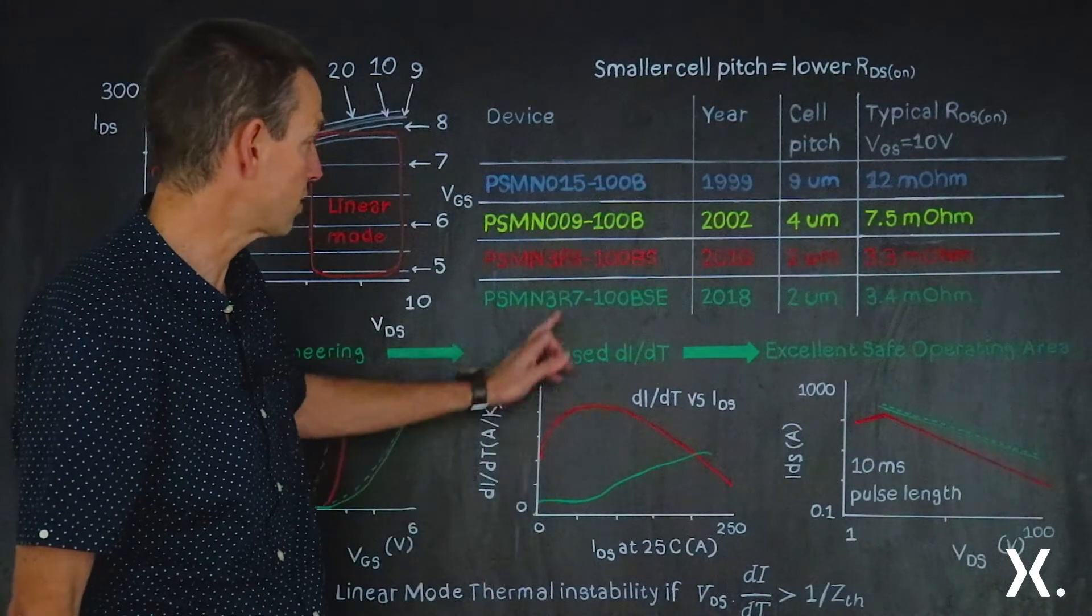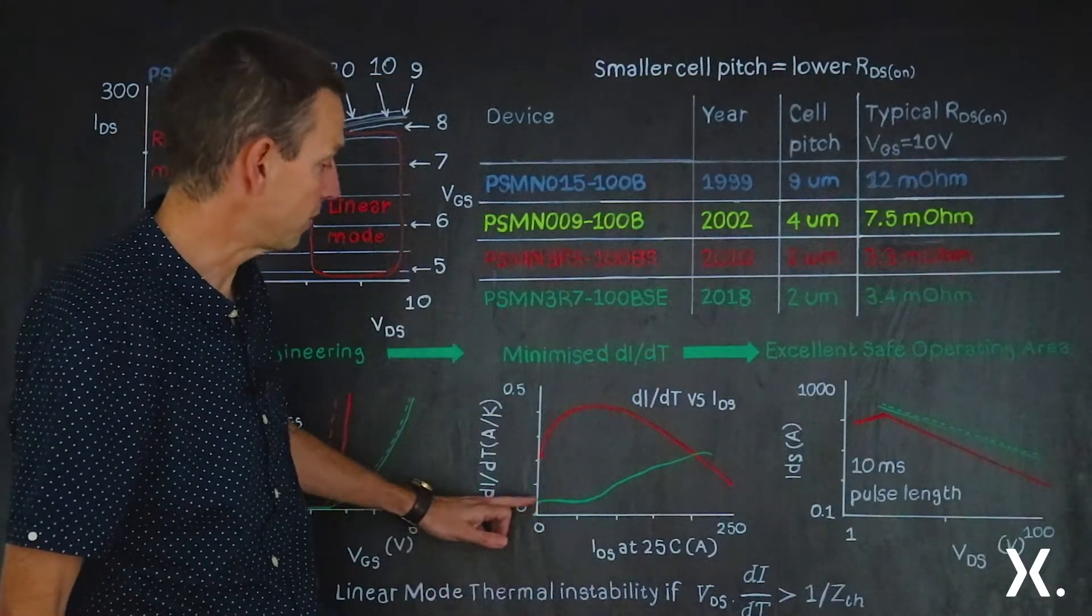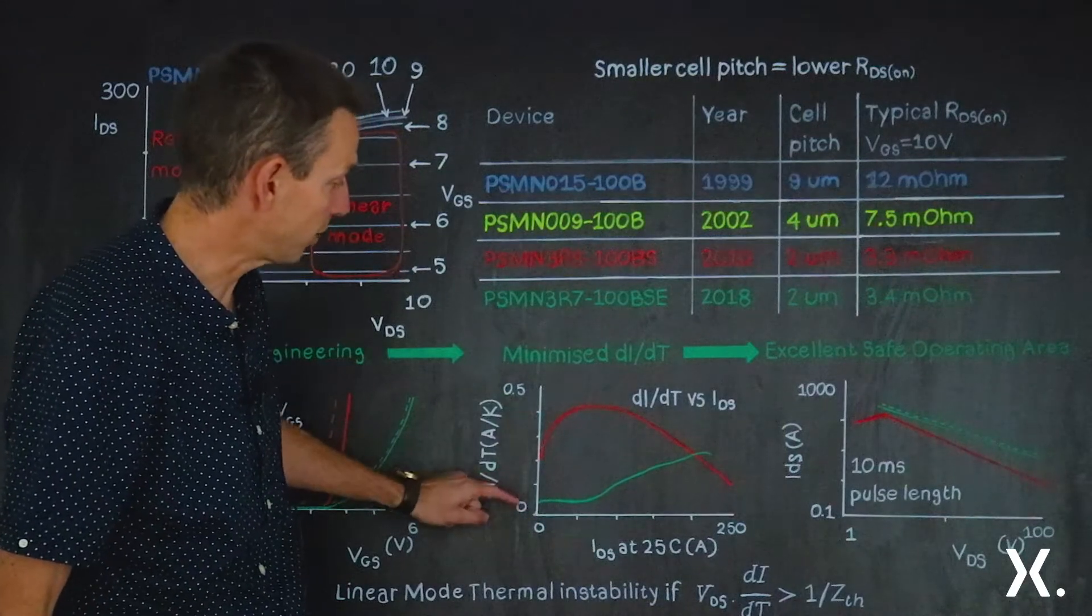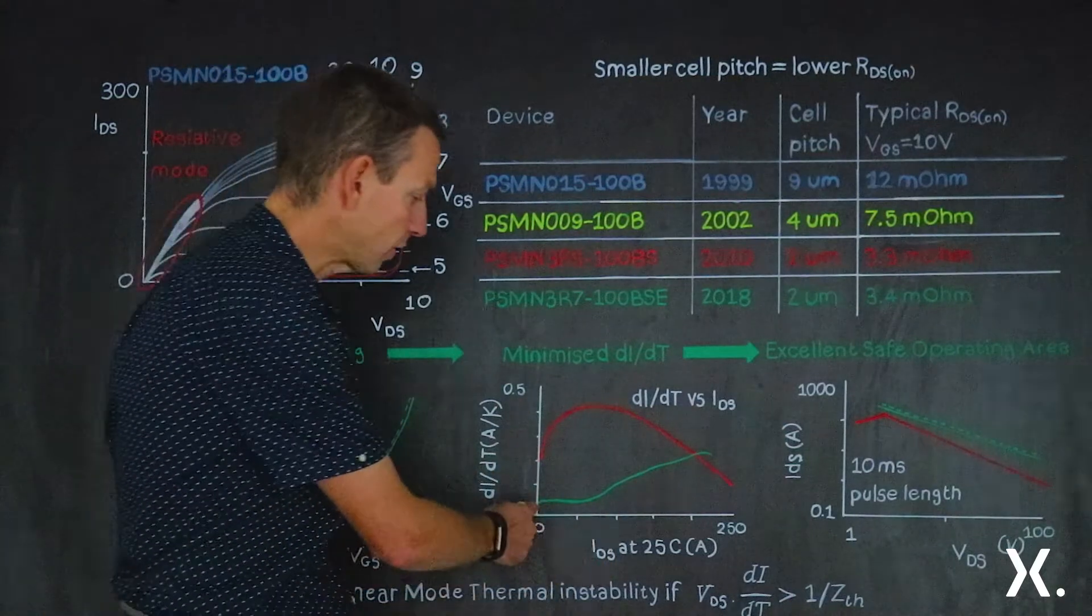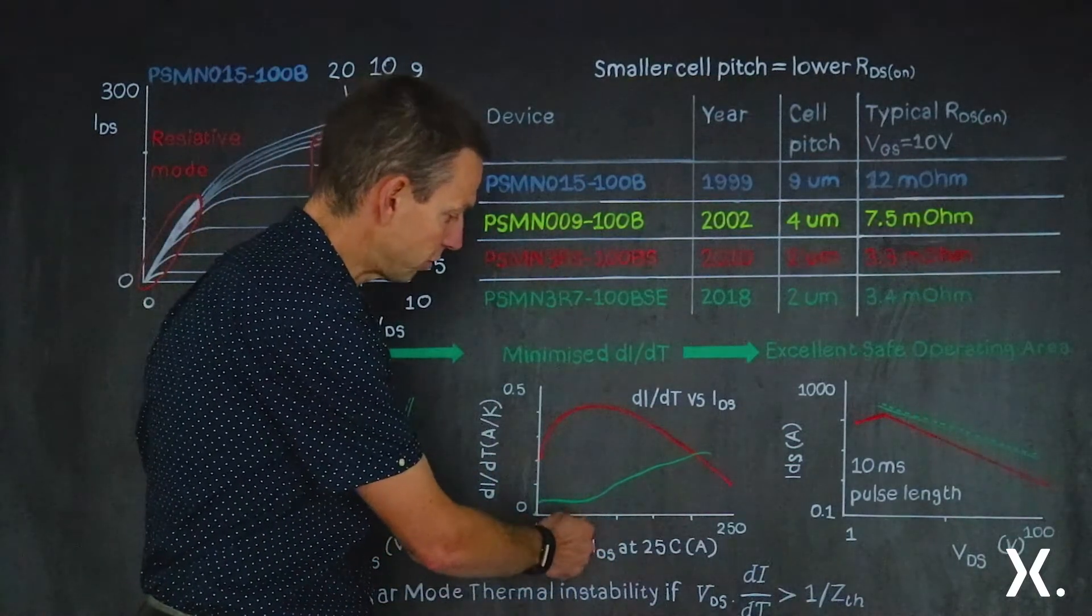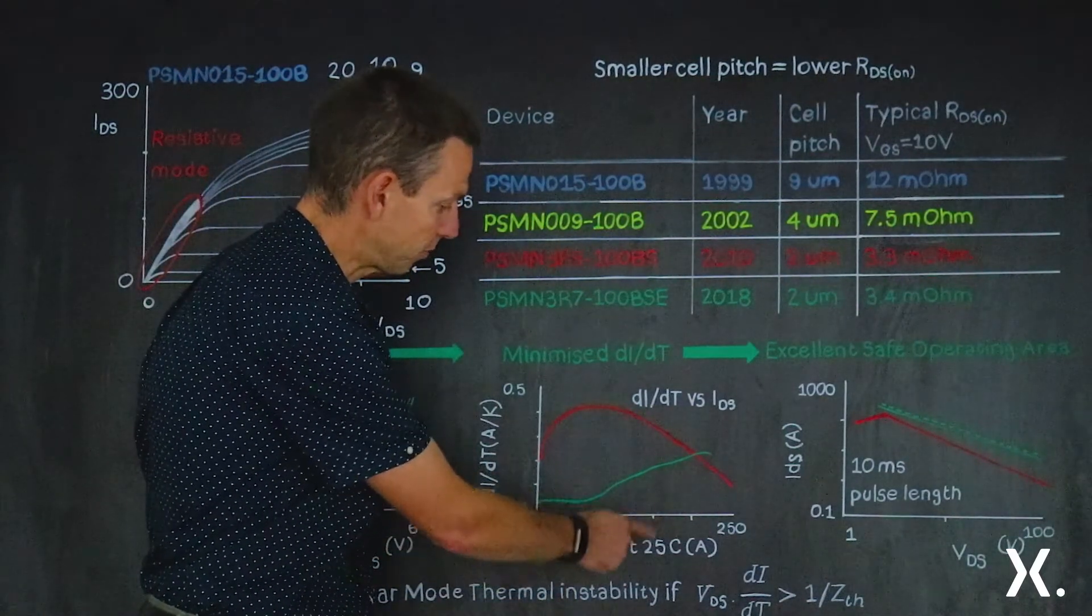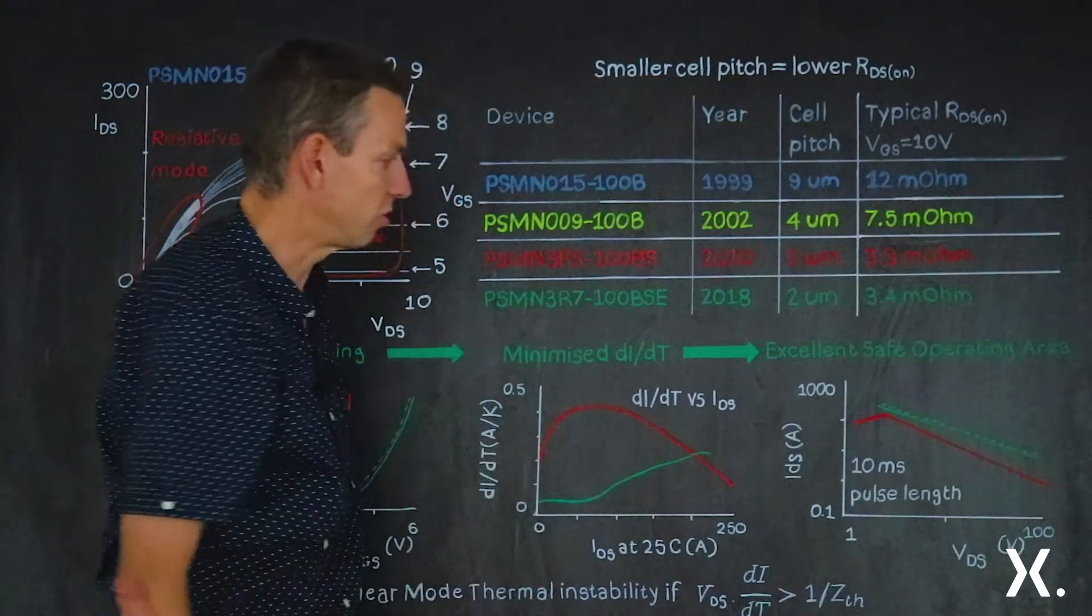But now this new device, the PSMN-3R7-100BSE, has been designed to minimize the DI-body-T across a large range of currents. And most critically, where the MOSFET's typically used, around 50, 100, maybe 150 amps, the DI-body-T on this green device has really been minimized.